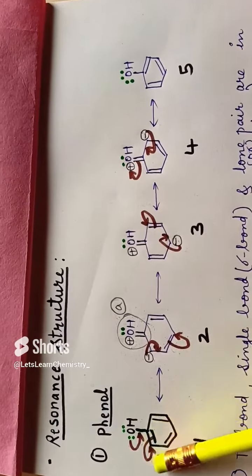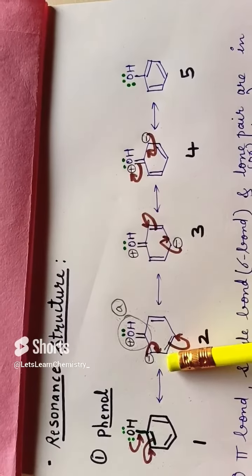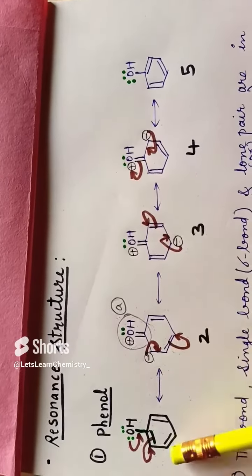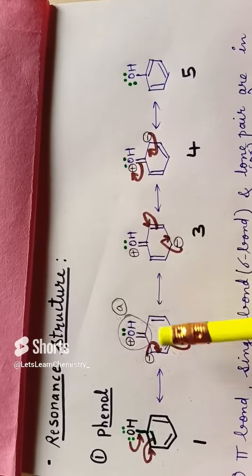Whenever two electrons shift, carbon gets a negative charge. And two bonds remain as they are.